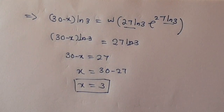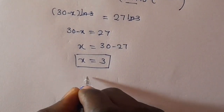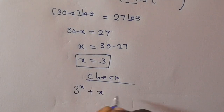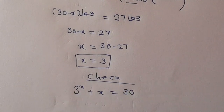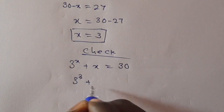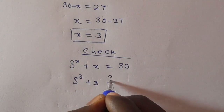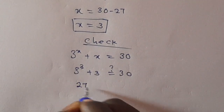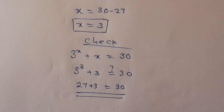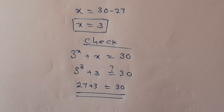If you are new here, don't forget to share, like, comment, and subscribe to my YouTube channel for more mathematics tutorial videos. To check: we have 3 to the power x plus x equals 30. When x equals 3, we have 3 to the power 3 plus 3, which gives us 27 plus 3, which equals 30. So this is true for the value of x equals 3. Bye bye!